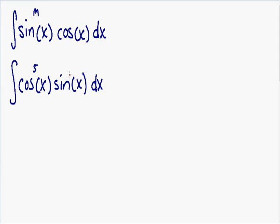Our first step is to pick our u. We always pick u to be the trig function with the exponent. Our cosine of x has the exponent of 5, so we are going to pick cosine of x to be our u. So u is equal to cosine of x.